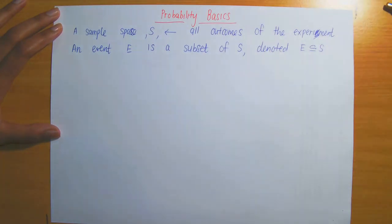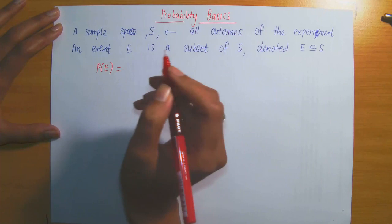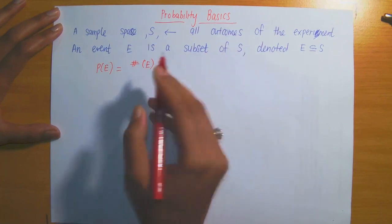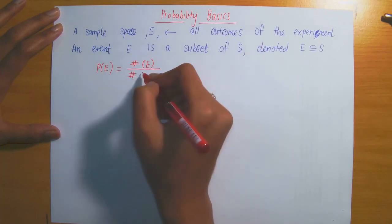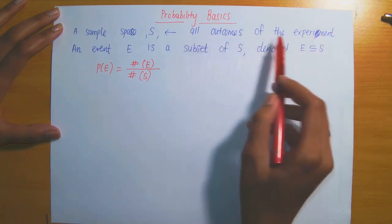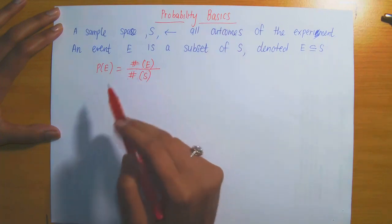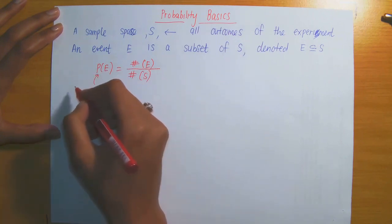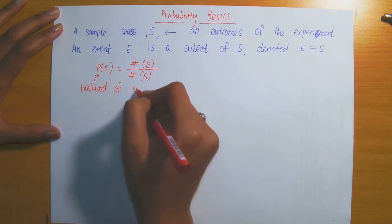If we wanted to talk about the probability of event E occurring, then the probability of E is equal to the number of ways in which event E can occur, divided by the total number of all possible outcomes of the experiment. Essentially, what we are trying to calculate or measure is the likelihood of event E occurring.